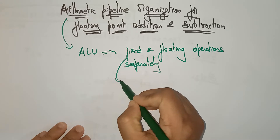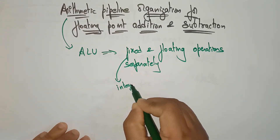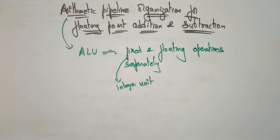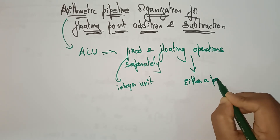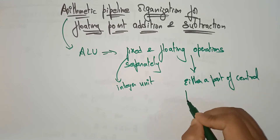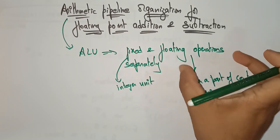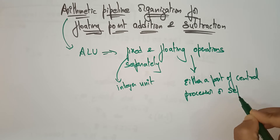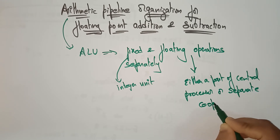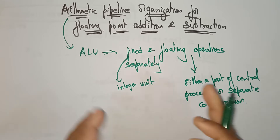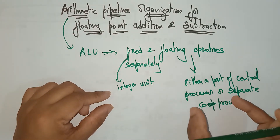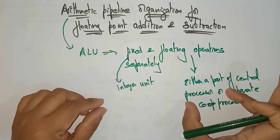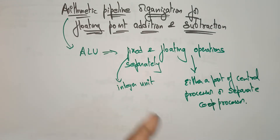For fixed point, it is nothing but an integer unit. An integer unit is present in the arithmetic logic unit for doing fixed point calculations. For the floating point unit, it can be built either as a part of the central processor — the microprocessor — or you can add it as a separate coprocessor. So for fixed point we use a separate integer unit, and for floating point it can be integrated into the central processor or taken as a separate coprocessor.